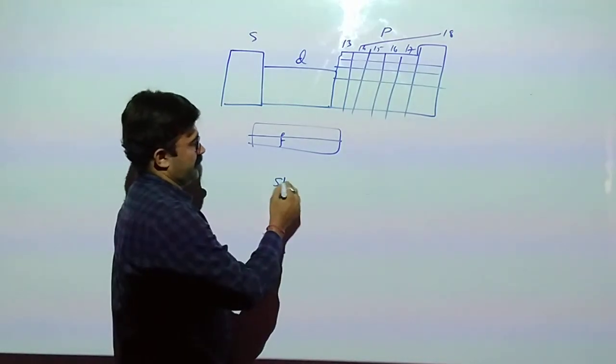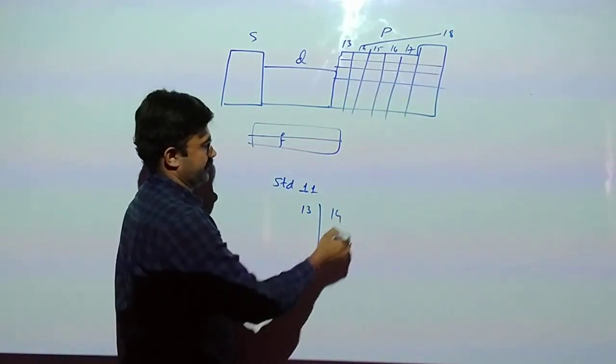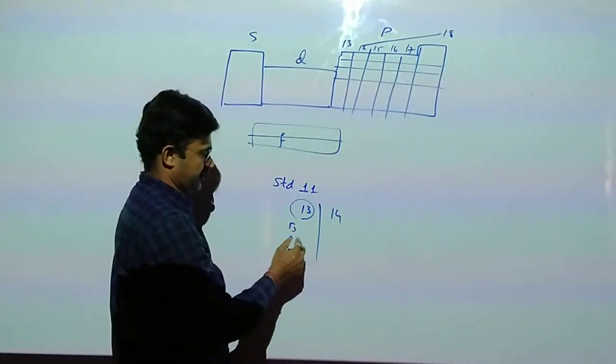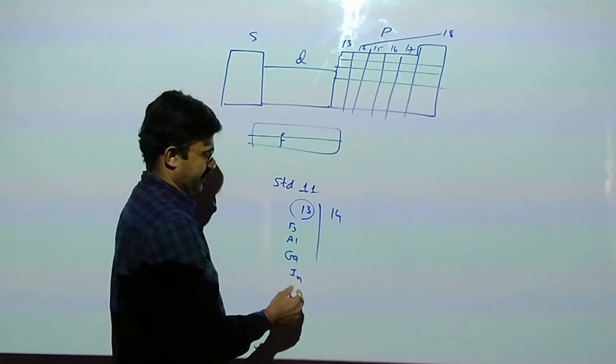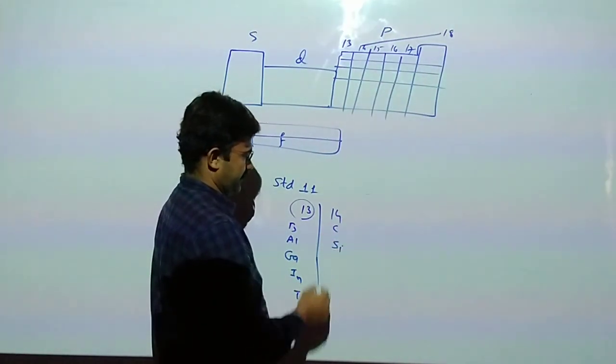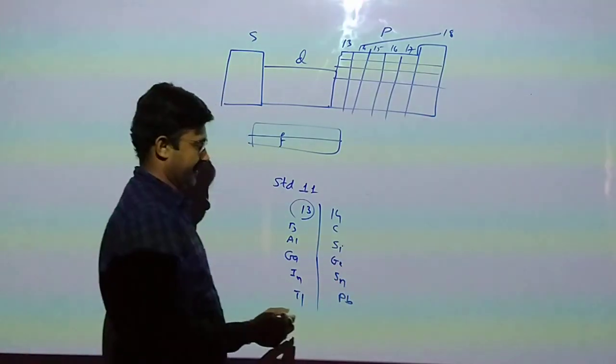In Standard 11, group number 13 and 14 completed. Boron group: Boron, Aluminium, Gallium, Indium, Thallium. Group number 14: Carbon, Silicon, Germanium, Tin, and Lead.